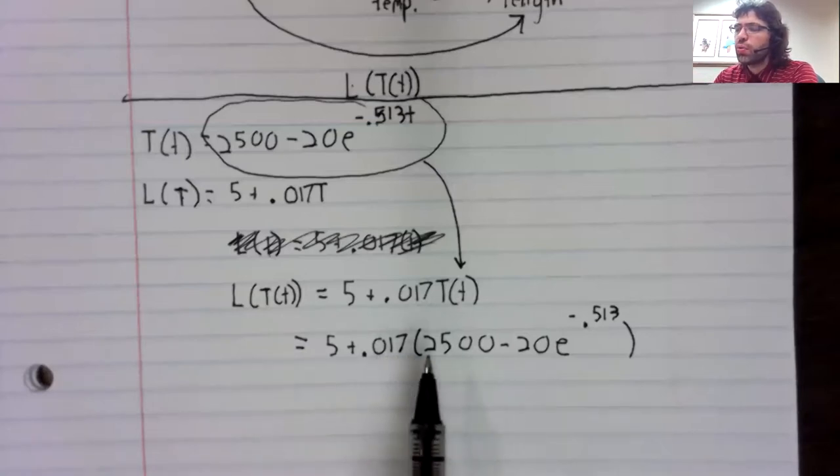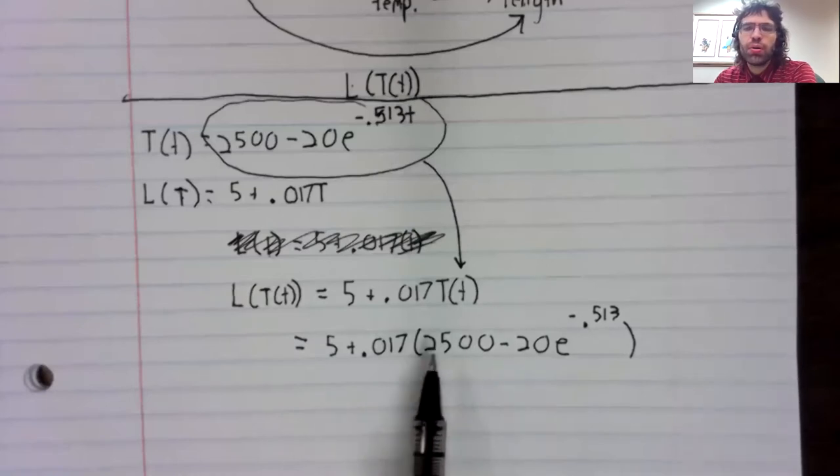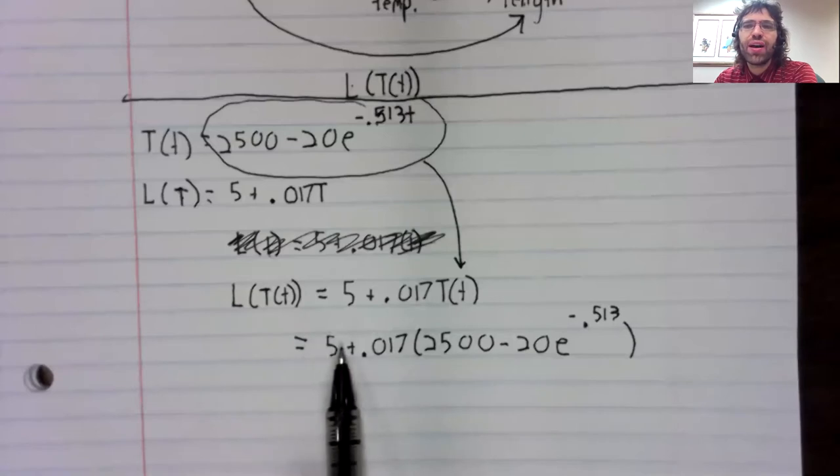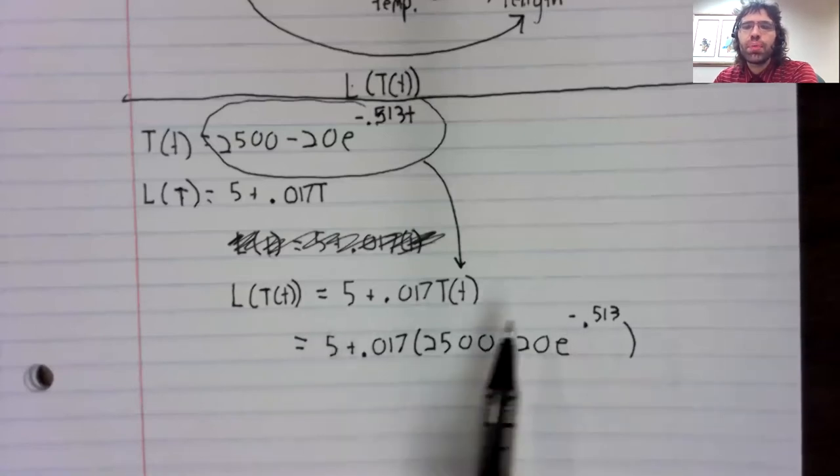You could simplify this if you wanted to. This decimal times this number is just a number which you can then add five to. But this is the important part of the example, the actual composition being done.